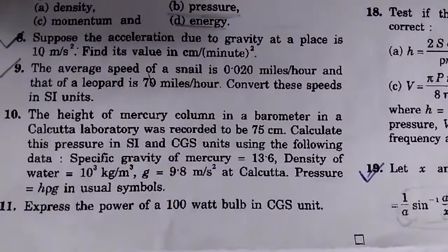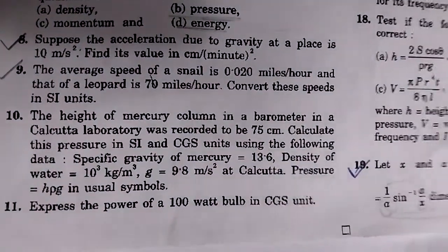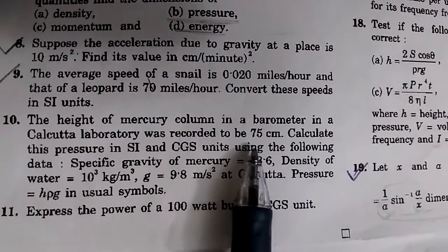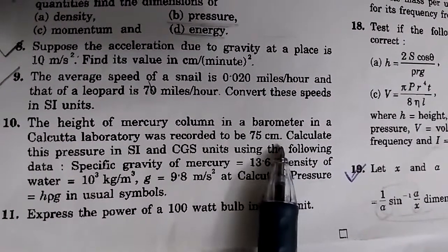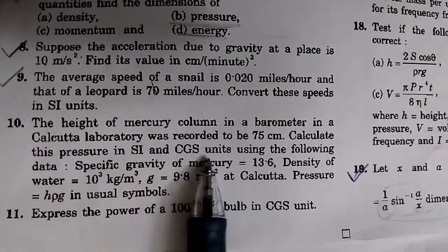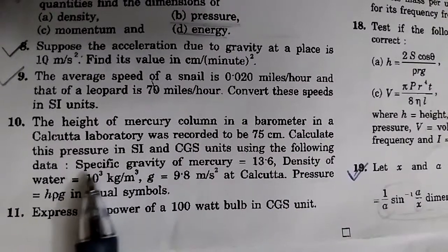Question number 10. The height of the mercury column in a barometer in a Calcutta laboratory was recorded to be 75 centimeter. Calculate this pressure in SI and CGS unit using the following data.